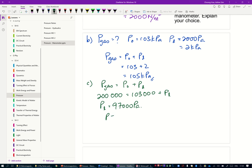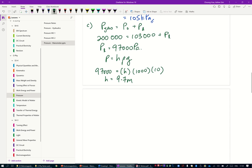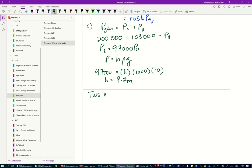So from P equals H rho g, if I use water, that means my density is now 1000. 97,000 equals H rho g and my H is 9.7 meters. So this means the height of the manometer is more than 9.7 meters.